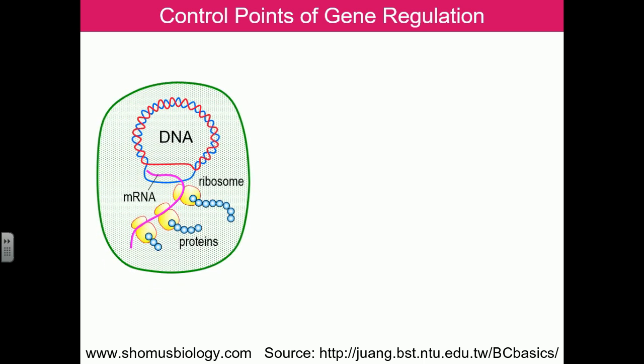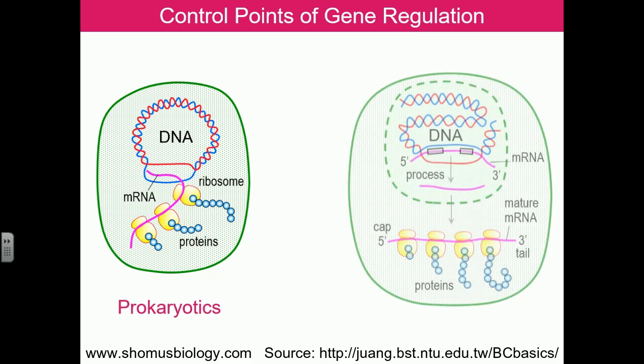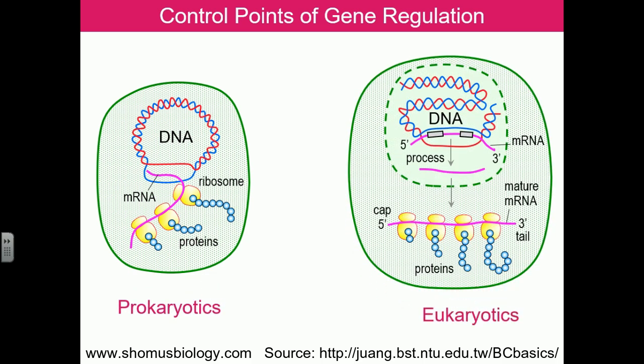Beginning with the control points of gene regulation, let's look at the differences between prokaryotic and eukaryotic cells. The prokaryotic cell has a much more basic level of gene expression — the DNA is placed in the cytosol, transcribed to mRNA, and then translated into proteins. In eukaryotes, the DNA is present inside the nucleus, so transcription takes place inside the nucleus, where several rounds of RNA editing, modification, and splicing occur.